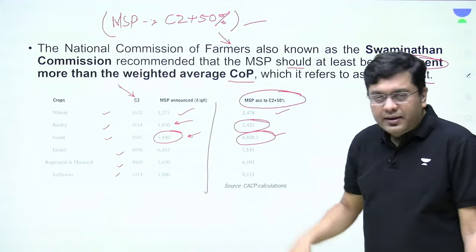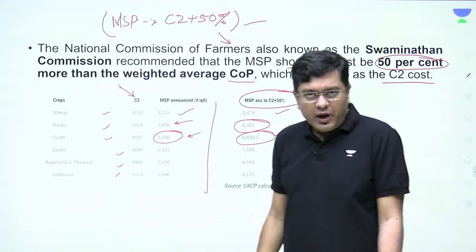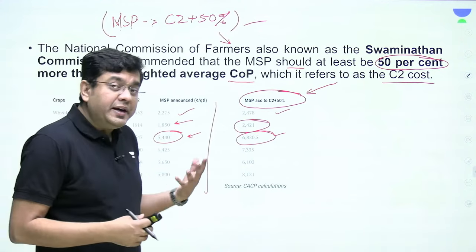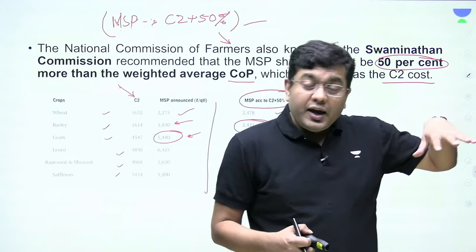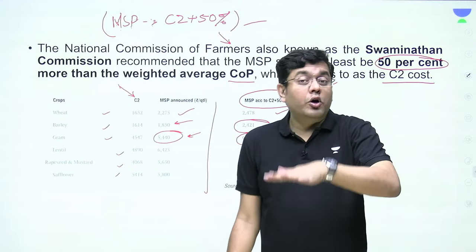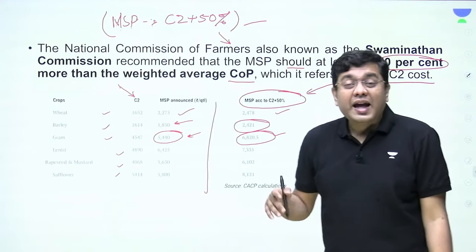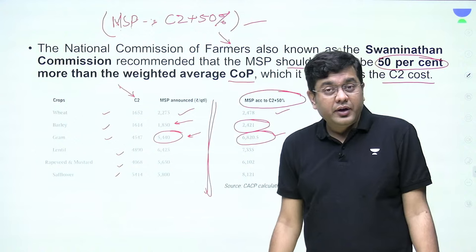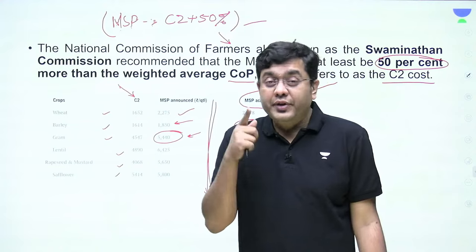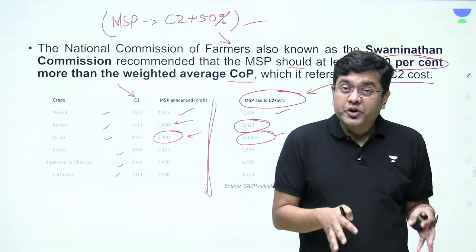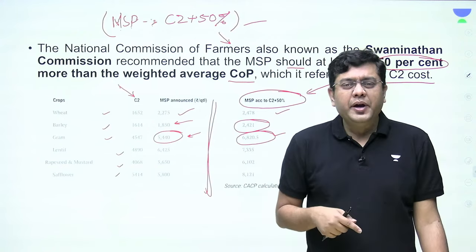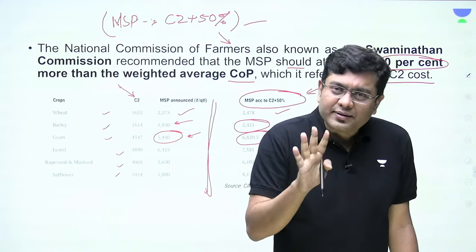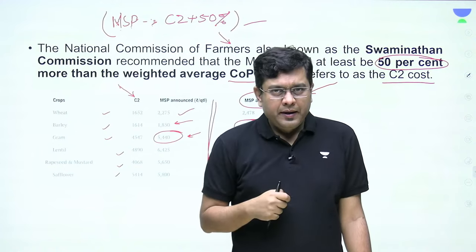The consistent trend is that the C2+50% formula is not applied by the government when announcing MSP. The government argues it takes the weighted cost average across the country. The counter-argument is that at minimum, C2+50% should be maintained. It is not being maintained, meaning farm income is reducing — leading to farm impoverishment and consistent farm agitations now and into the future.